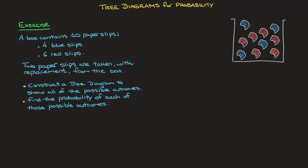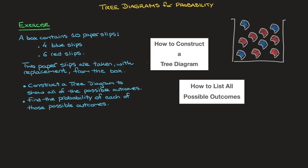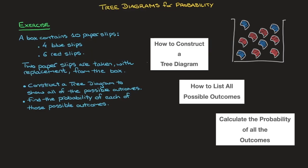Hi everyone. We'll now learn about tree diagrams for probability. In this tutorial we're going to focus on learning how to draw or construct a tree diagram, as well as how to list all of the possible outcomes of an experiment, and finally we'll see how to calculate the probability of each of those possible outcomes.